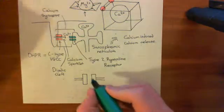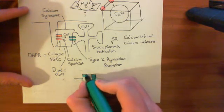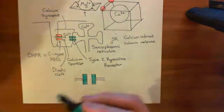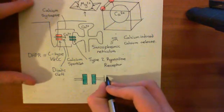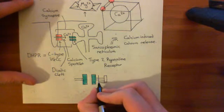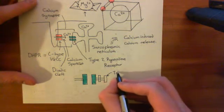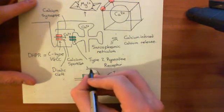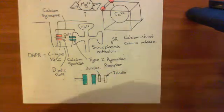We're talking about this type 2 ryanodine receptor here, which is in turquoise. Basically, this is complexed with two other proteins known as triadine and junctin, which are both also linked with the protein calsequestrin. One of these represents triadine and the other represents another protein called junctin, and these are both bound with the type 2 ryanodine receptor.